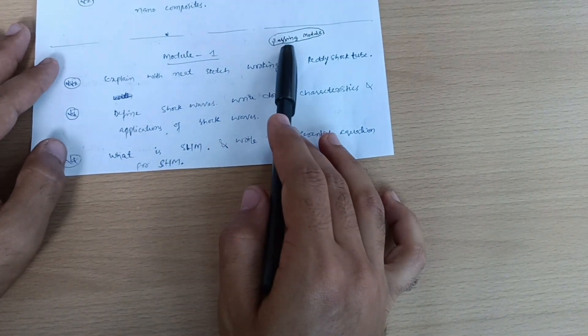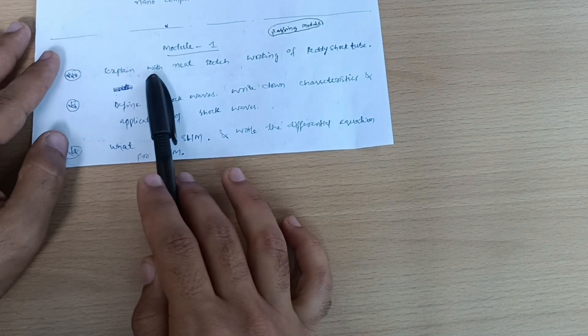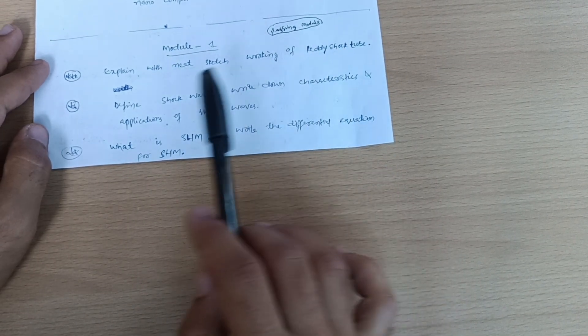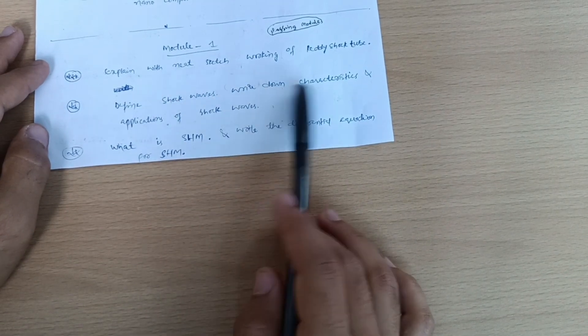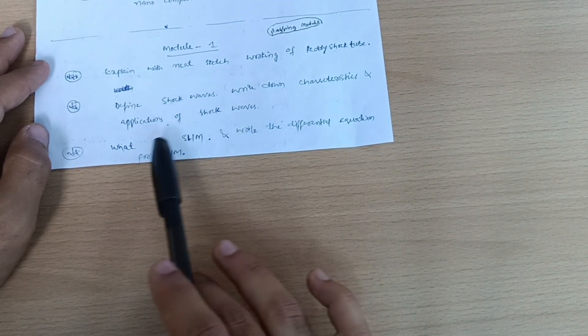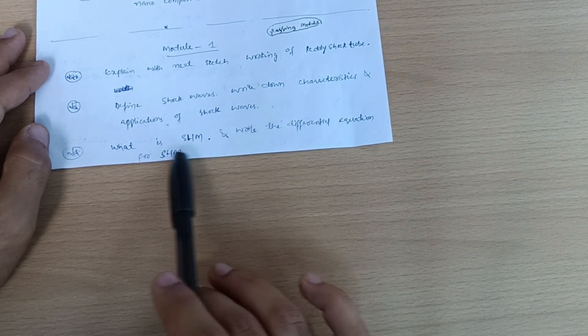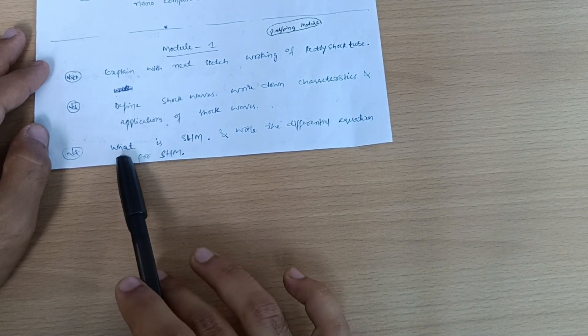Module 1 is again a passing module. Explain with neat sketch working of Reddy shock tube, super important one. Next we have: define shock waves, write down characteristics and applications of shock waves. What is SHM and write the differential equation for SHM. There is no derivation for it, so simply what is simple harmonic motion and write down the differential equation for SHM.